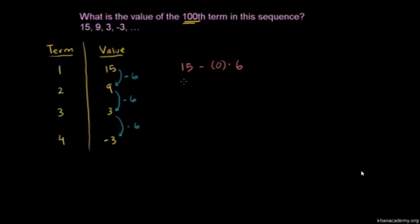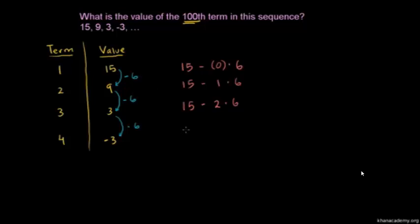What's the second term? This is 15 — we just subtracted negative 6 once, or you could say minus 1 times 6. We're subtracting the 6 once. Then the third term is 15 minus 2 times 6 — we're subtracting 6 twice.